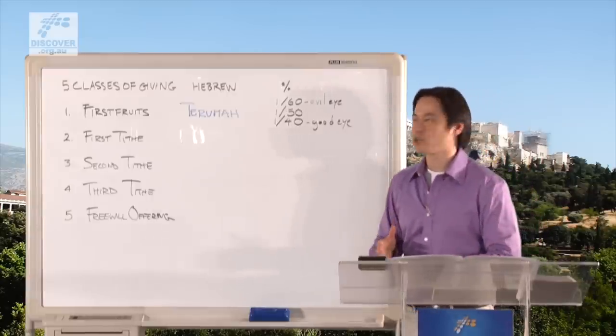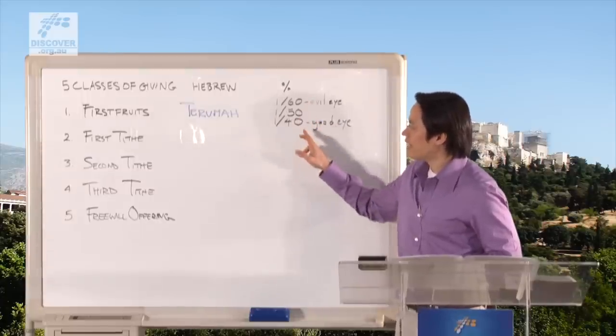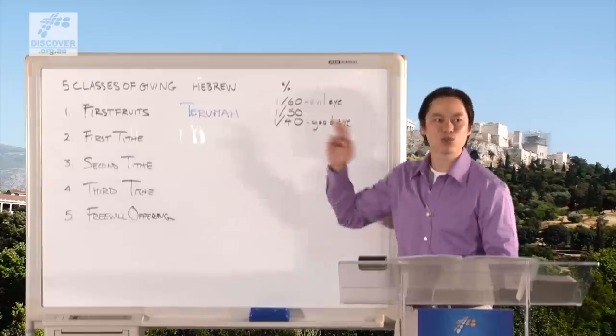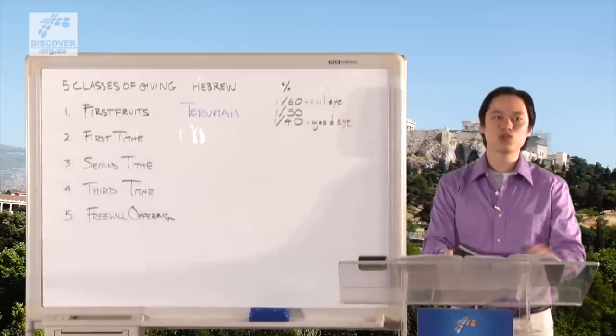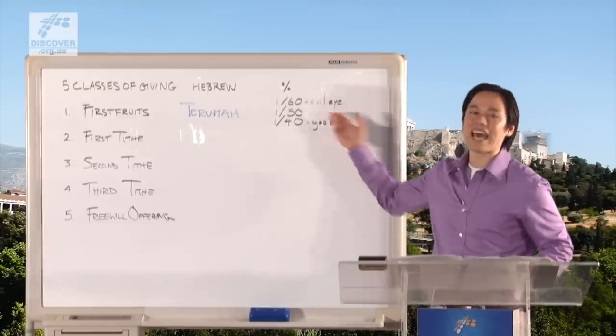Jesus actually comes along, and he settles the debate between Shemai and Hillel. And here's what Jesus said to all the Jews who knew about this debate, whether we have an evil eye or a good eye or kind of an average eye.